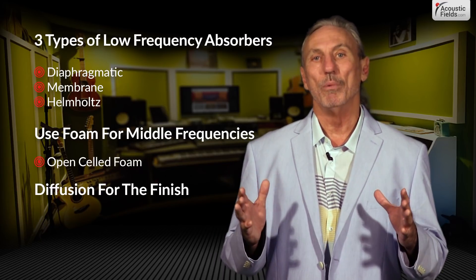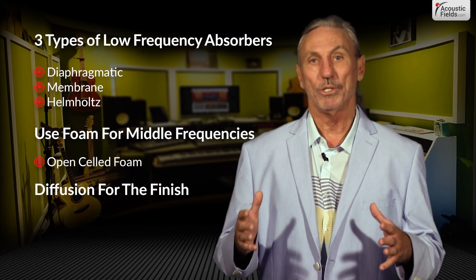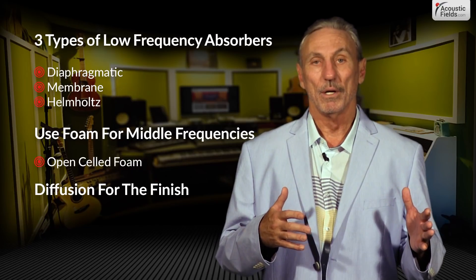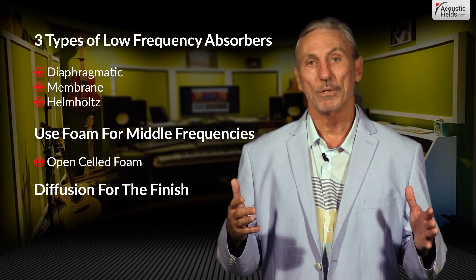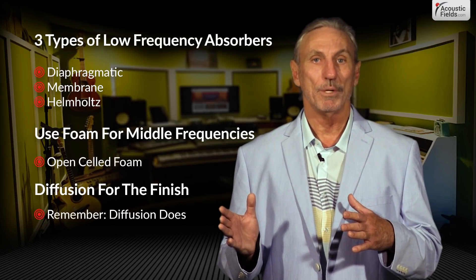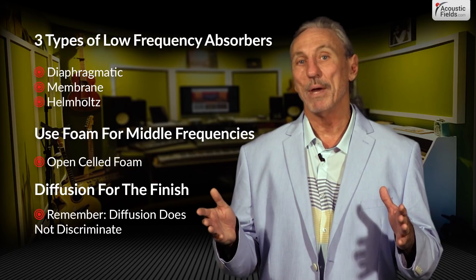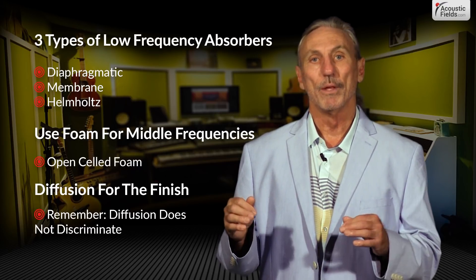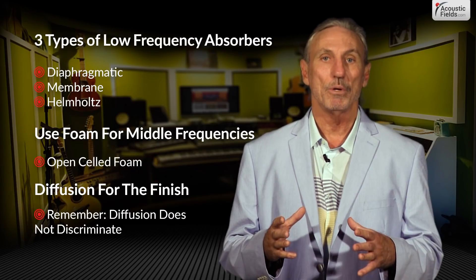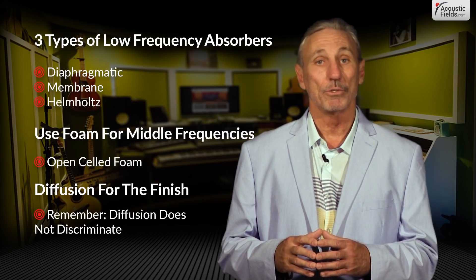Diffusion will take a small room and make it sound larger, but you have to have your house in order — your ducks in line, to use certain colloquialisms we use here in North America — because if you don't, diffusion does not discriminate. The flaws in your room response curve will be magnified through diffusion. So diffusion is the chocolate sauce on the ice cream: you've got to have the ice cream first, and then you can go ahead and make it sweeter.